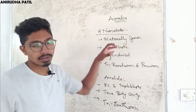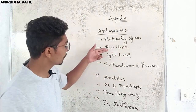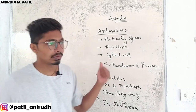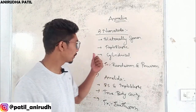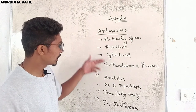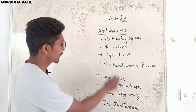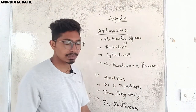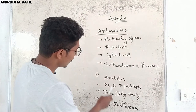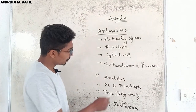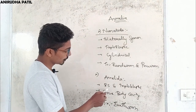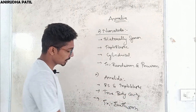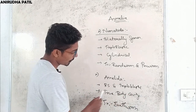The next group is Nematoda. Their body is also bilaterally symmetrical with three layers of cells, called triploblastic. Unlike Platyhelminthes, the body is cylindrical. Examples include roundworm and pinworm. Most organisms here are parasitic in nature.